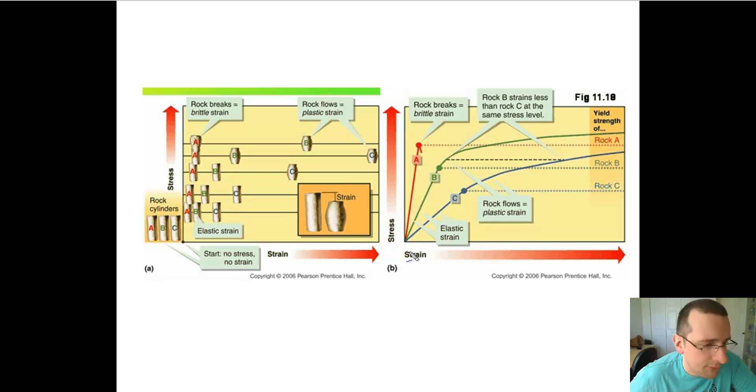You see that rock A will change very, very fast. So you have a very steep slope of how much it changes. But then it will finally break because the rock A was very brittle. So it broke before it actually bent too much. So it bent very fast and then it finally broke.